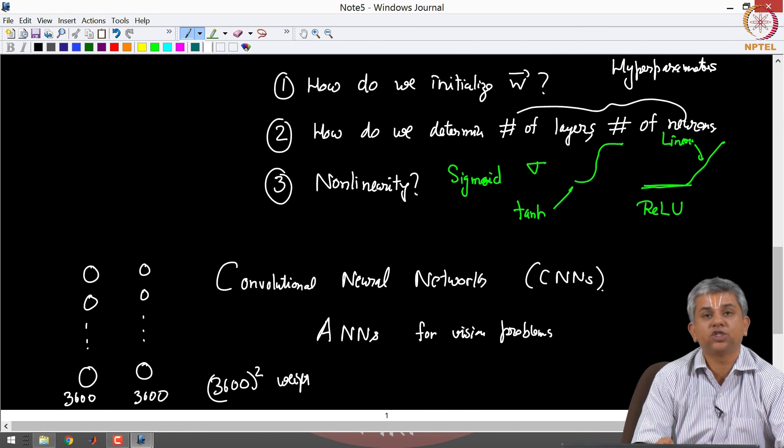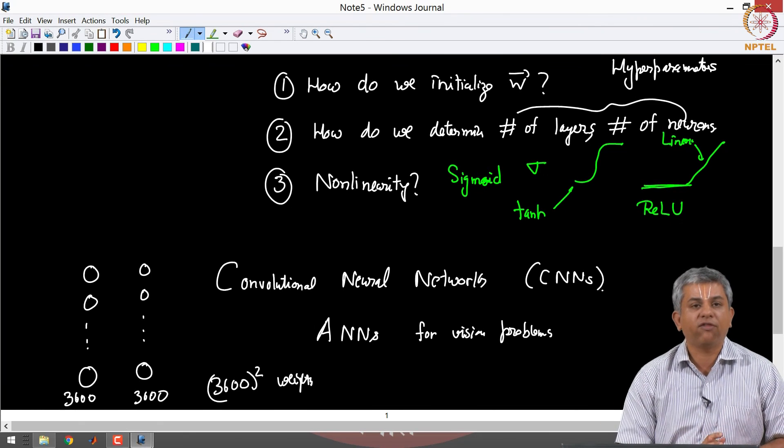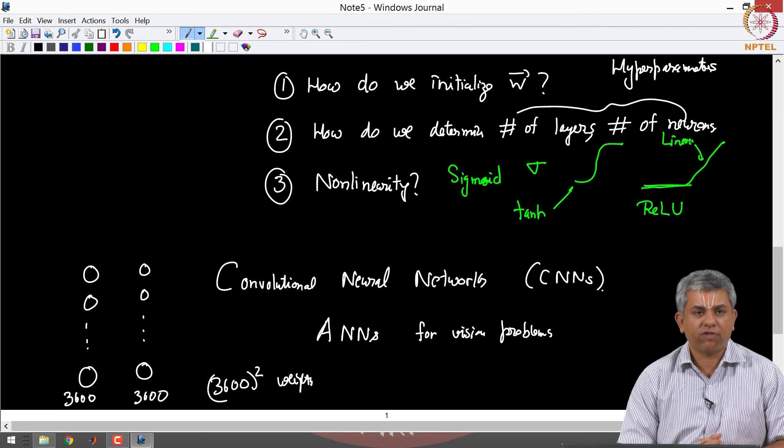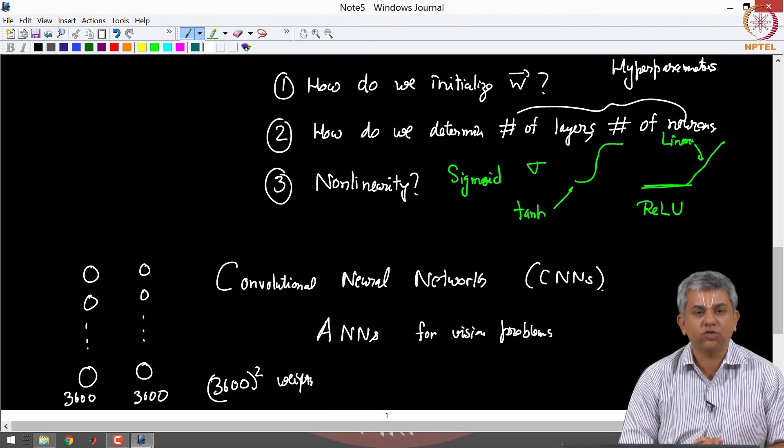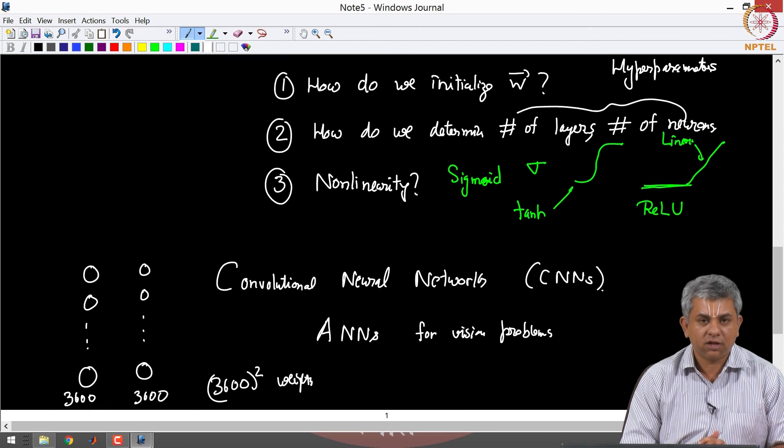Vision problems deal with large images so you will have very large features which means you have to deal with a huge number of weights. So instead of doing that, a trick is to use what is known as convolutional neural networks. We will start seeing that from next week. Thank you.